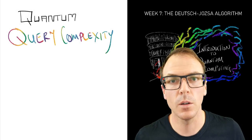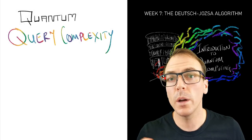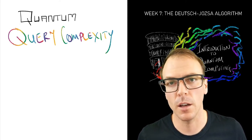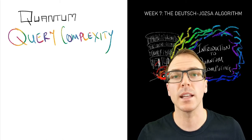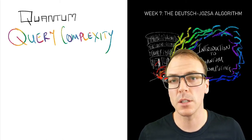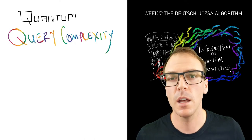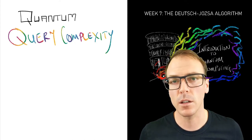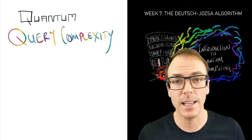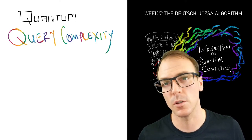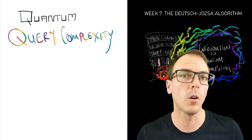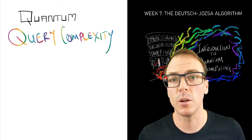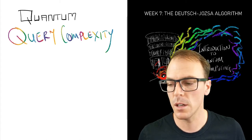In the last video we talked about query complexity, which was how many inputs we had to check of an unknown function before we could answer some question about the properties of that function. The properties we were considering were constant versus balanced. A constant function has the exact same output on every input — either all zero or all one. A balanced function is one that has the same number of zeros and ones.